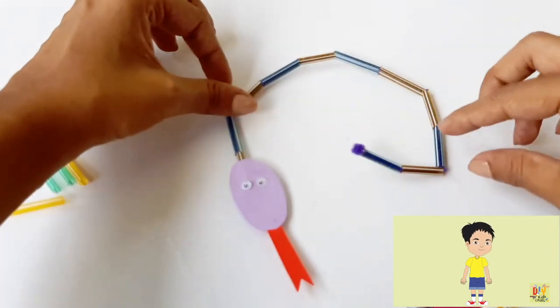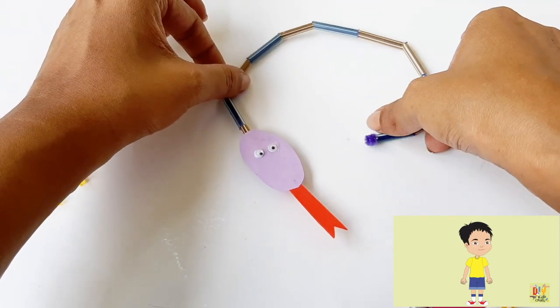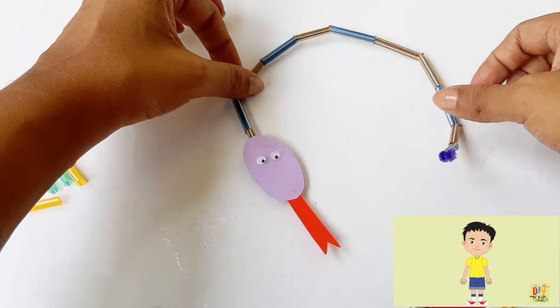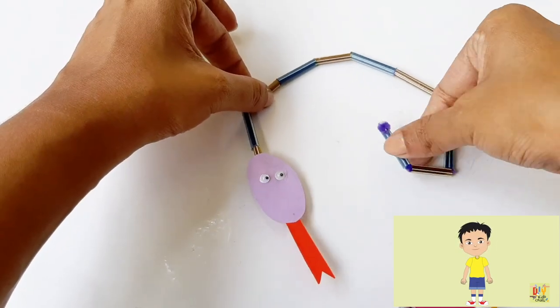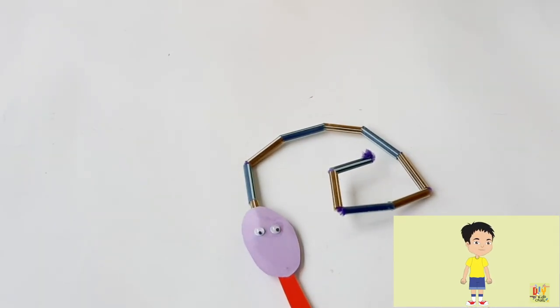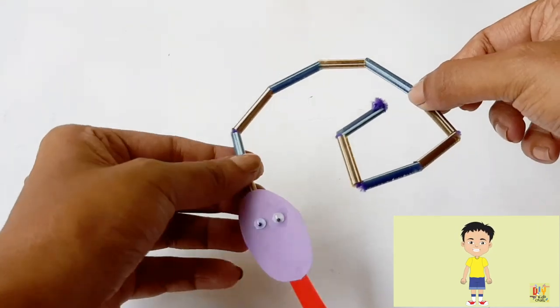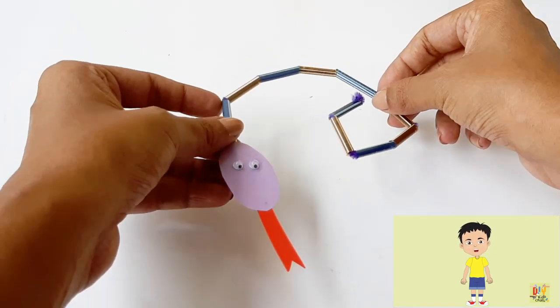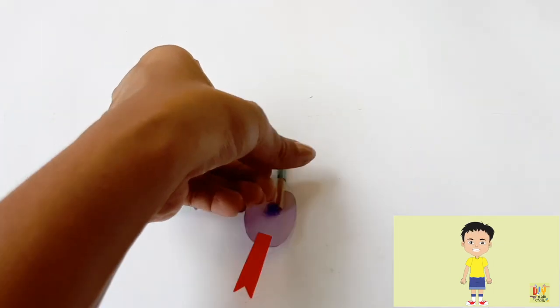And there you have it, our very own friendly snake. With the fuzzy wire, you can actually change the shape of our snake. It can be circular, swirly, it's up to you.